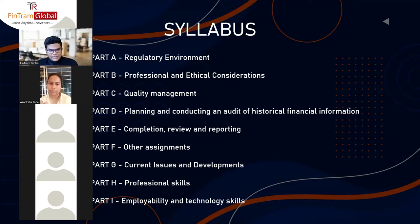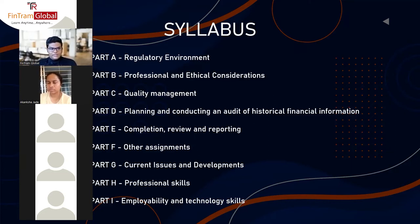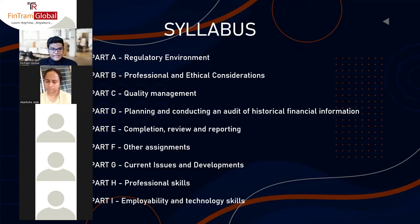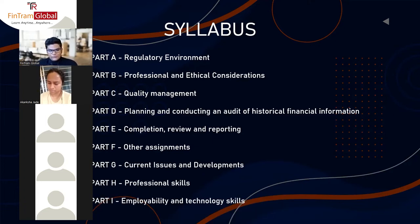Part G is current issues and developments, which is embedded within various sections of the exam questions. Current issues cover the latest updates in the industry — not just standards but also exposure drafts in progress and revisions to standards. Recently there was a revision to the professional code of ethics for professional accountants. For current issues, we recommend students always look at technical articles, as a new technical article signals that topic can be tested. We have covered all the latest technical articles within this syllabus area.